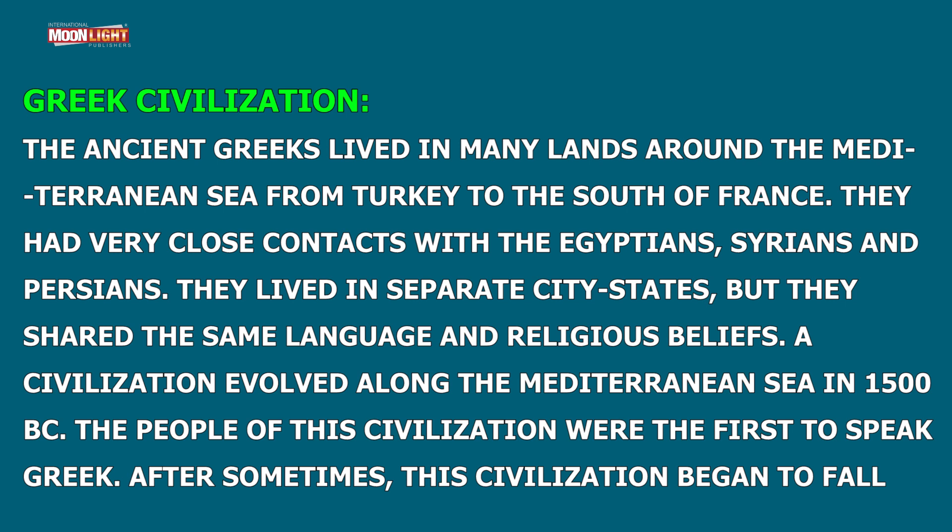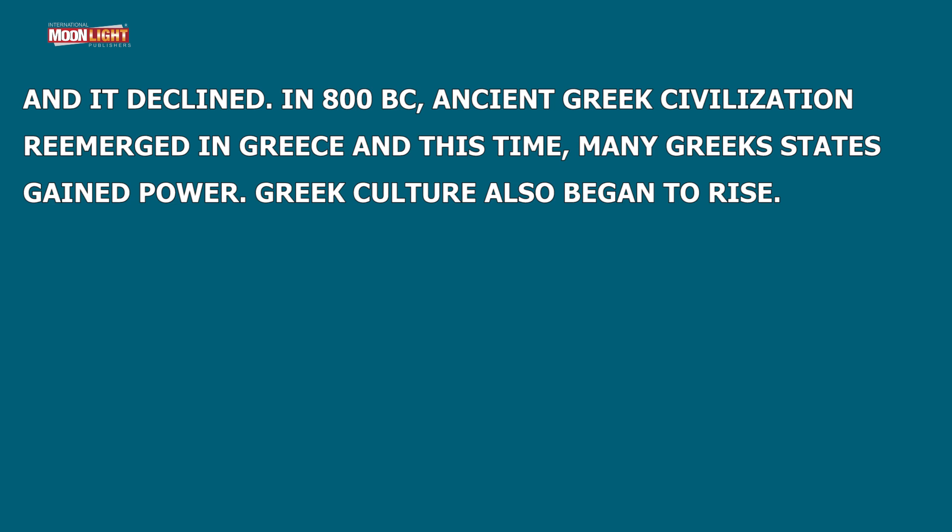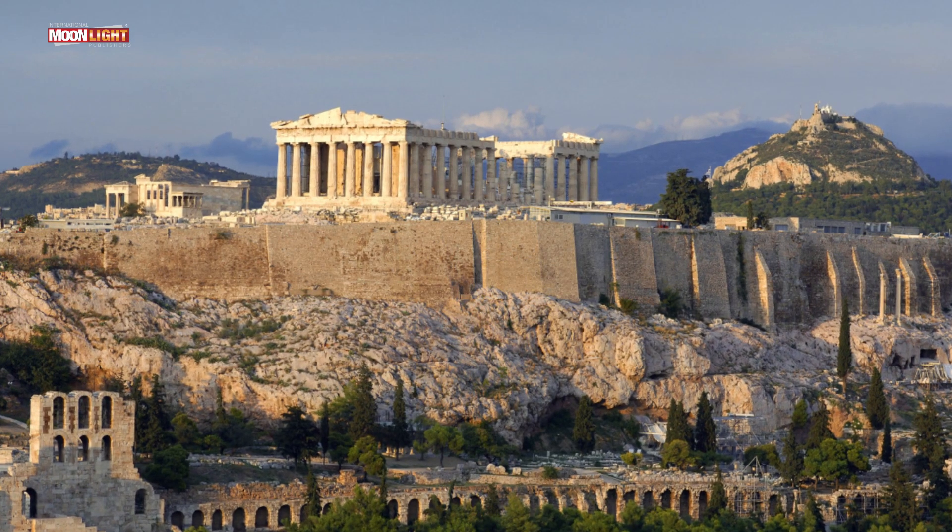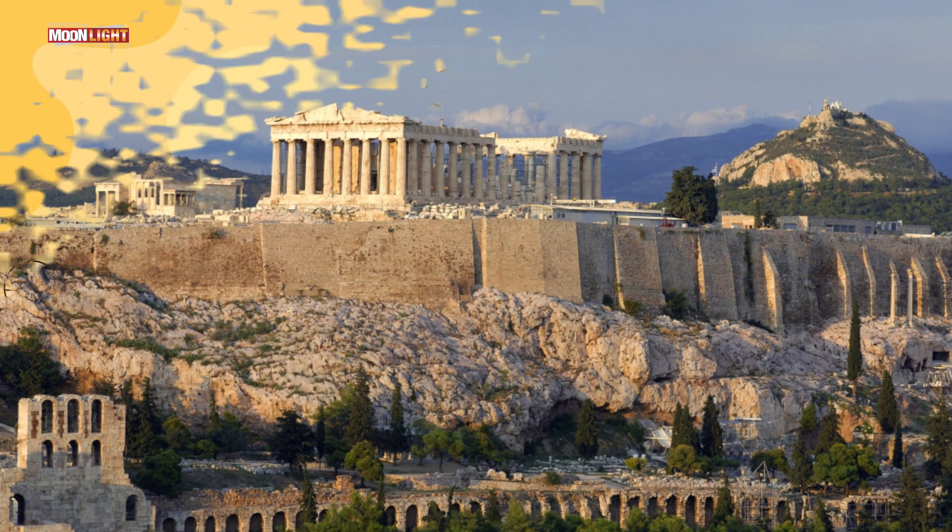A civilization evolved along the Mediterranean Sea in 1500 BC. The people of this civilization were the first to speak Greek. After some time this civilization began to fall and decline. Around 1800, ancient Greek civilization re-emerged and many Greek states gained power; Greek culture also began to rise. Athens, Sparta and Thebes were cities of the Greeks.